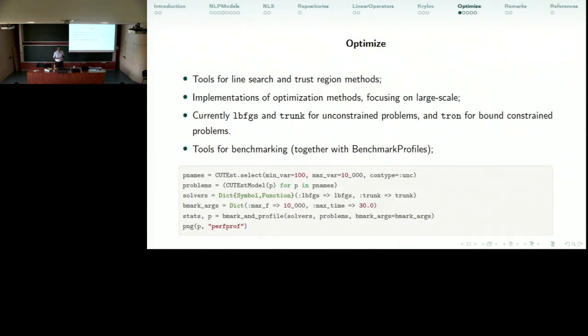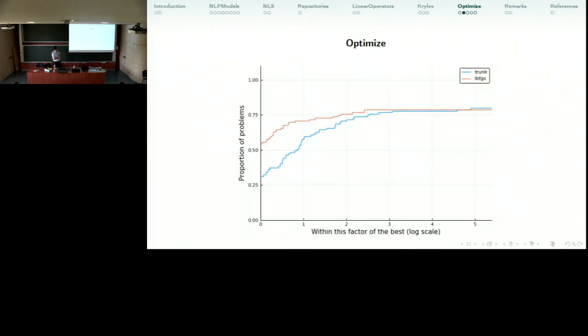On the nonlinear optimization methods that we are developing, we have this Optimize package, which is not yet released, it doesn't have a stable release yet. It contains tools for line search and trust region methods that we used in our methods here. We have implemented two unconstrained methods, LBFGS and TRON, and TRON for bound constraint problems. They are focusing on large-scale factorization-free. And this Optimize also contains tools for benchmarking, including the benchmark profiles, which are the performance and data profiles. And this is a way that you can compare these solvers, in the third line LBFGS and TRON, in problems from the CUTEst collections from 100 to 10,000 variables. And the six lines, so this benchmarking profile will run everything and produce a performance profile for you, which in this case is this performance profile.